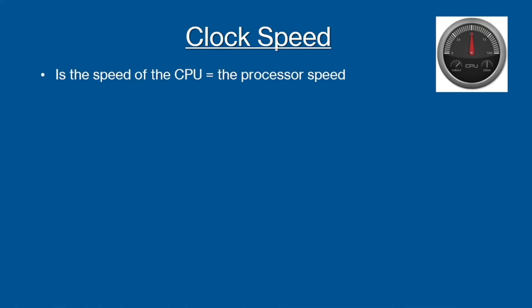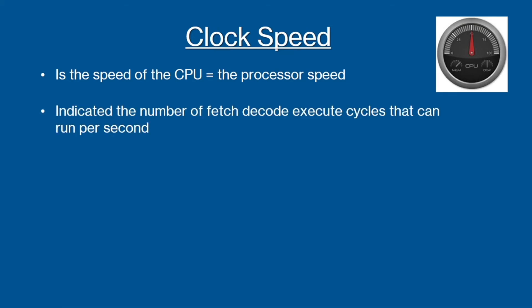The first factor that affects the performance of the CPU is the clock speed. This is the number of pulses that the CPU's clock generates per second, so is therefore the processor speed. The clock speed is measured in Hertz and also indicates the number of fetch, decode and execute cycles that can run per second.